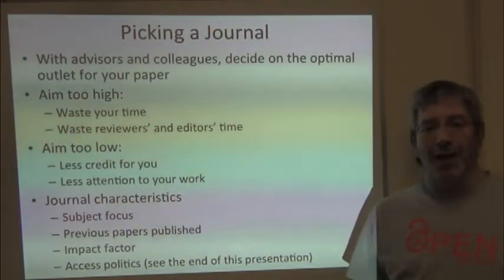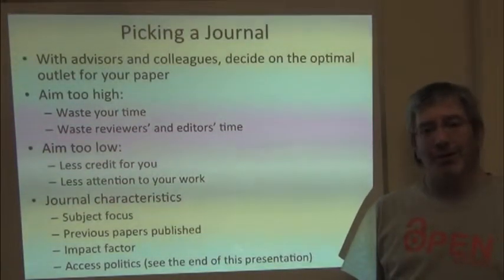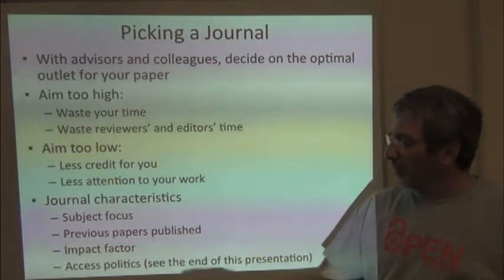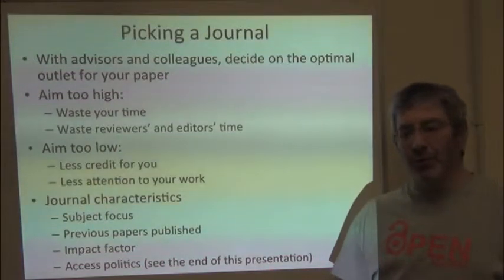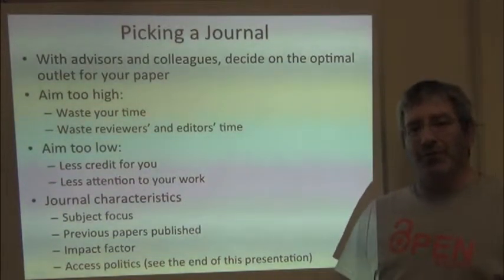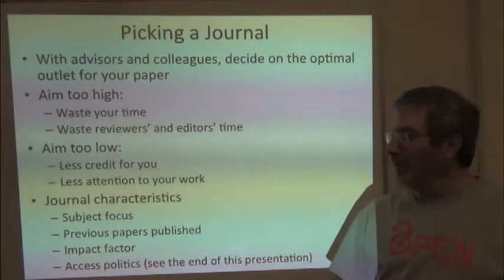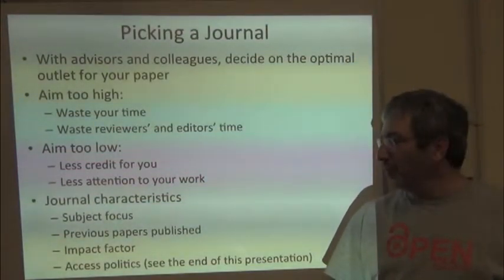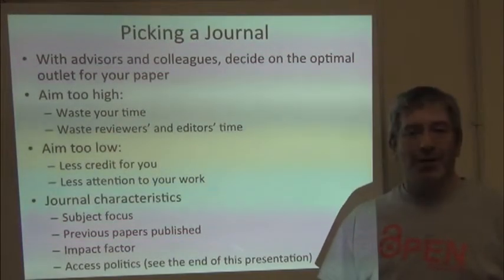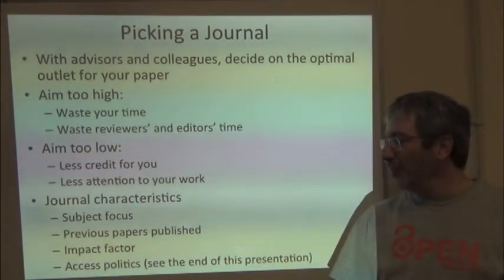At the other end of the spectrum, you can aim too low. If you have an important research result and put it in a very minor regional journal, you get less credit and your work gets less attention. We don't want a mistake on either end. Consider characteristics of the journal — look at the subject focus, read the statement of purpose, and don't think they'll like your work anyway if you don't fit their focus. Look at the table of contents to see what kinds of papers they publish, and ask whether that journal is interested in the sort of science you're doing.